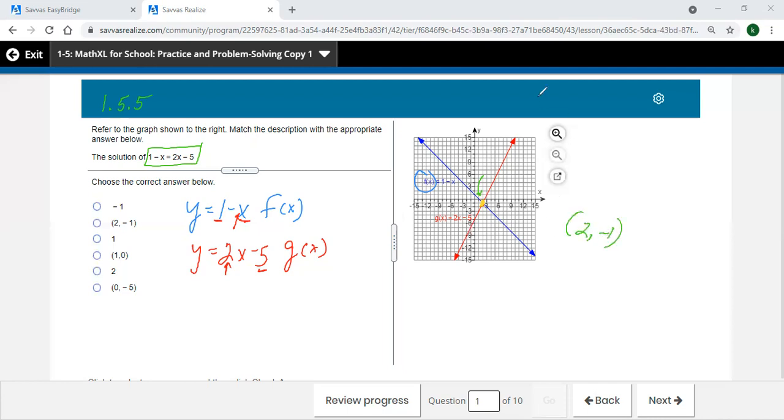But when you go back to the original problem, the only variable was the x. So the y isn't really part of the problem. We're just using this x, y coordinate graph to help figure it out. So the answer is just the 2. So it's going to be right down there, just this 2.